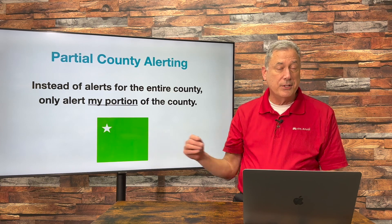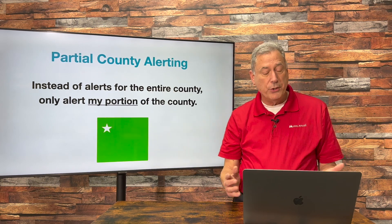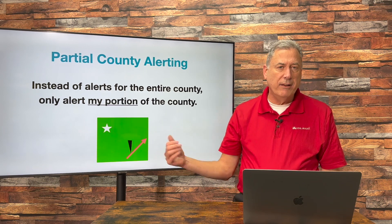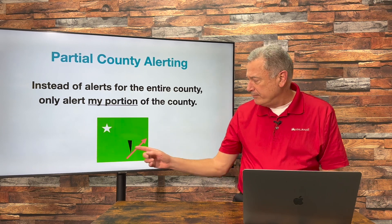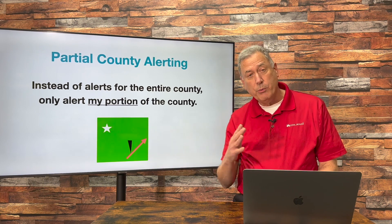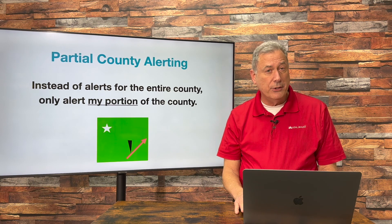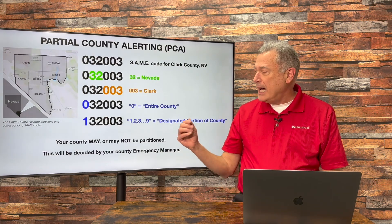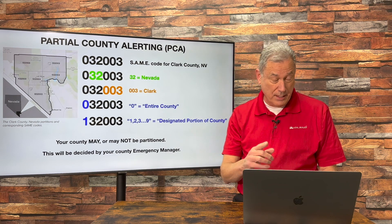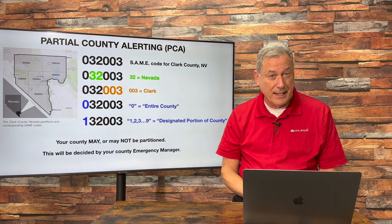Suppose this green box is your county — it's 20 miles by 20 miles, and you live up here where the star is, and they issue a tornado warning for way down in the corner of your county. That tornado is not coming toward you, but as it stands right now, your weather radio is going to go off. Under partial county alerting, you could tell your weather radio, I only live in a certain section of this county, and I only want to hear an alert when that tornado warning affects my section of the county.